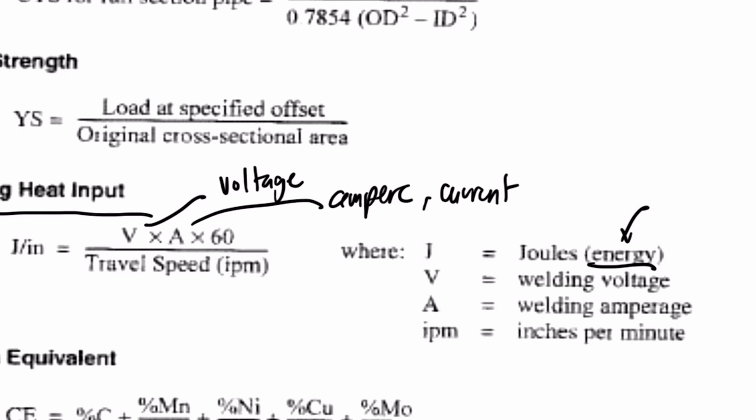As I've mentioned earlier, V is the voltage, A is the welding amperage, and the travel speed is measured in inches per minute.